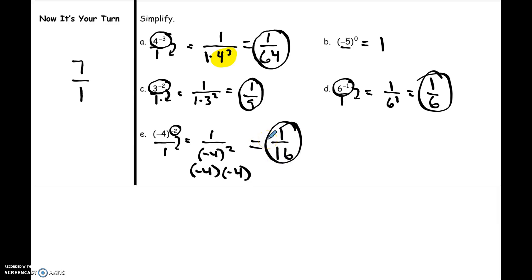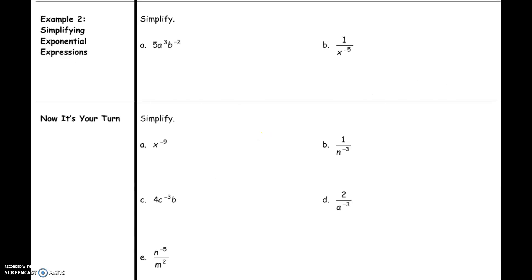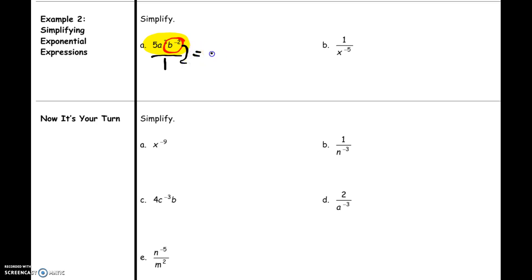That's a lot, but that's why you're watching the video so you can come to class with questions. Turn your handout over and look at the back side. These get a little more complicated, so let's look at the first example: 5a to the third power times b to the negative second power. The only thing you can simplify is the negative exponent, and that's only attached to the b. So I write it as a fraction over one, and move b to the negative second power down to the bottom, making it b to the positive second power. What's left on top is 5a to the third power. There's no other way to simplify this, so the answer is 5a³ over b².